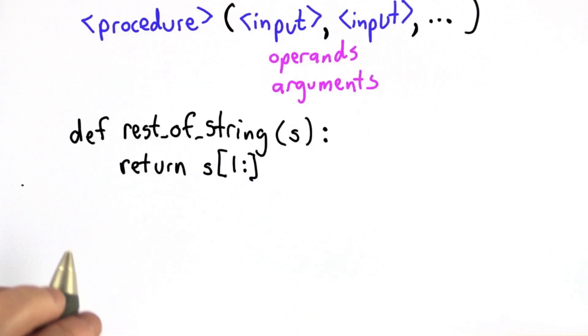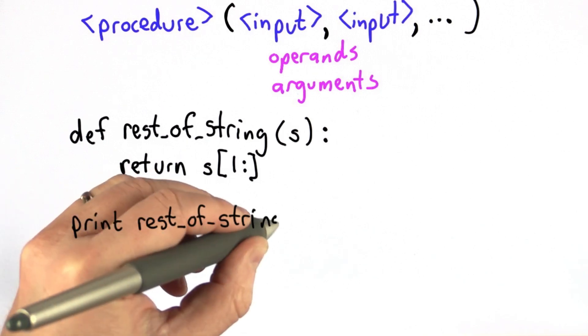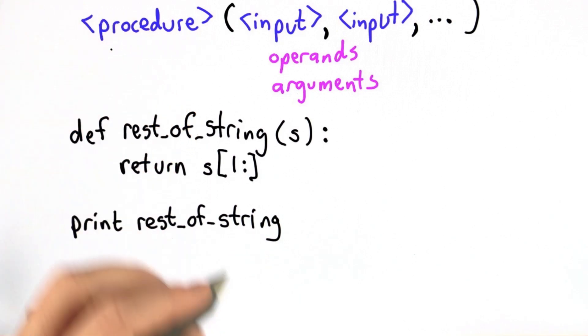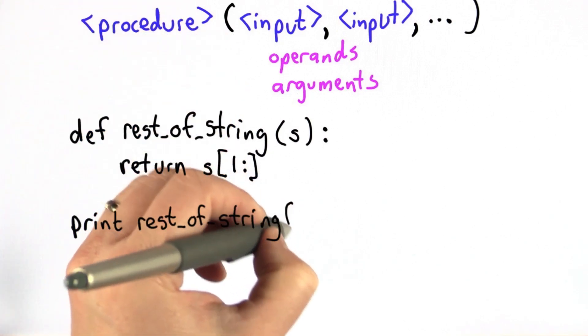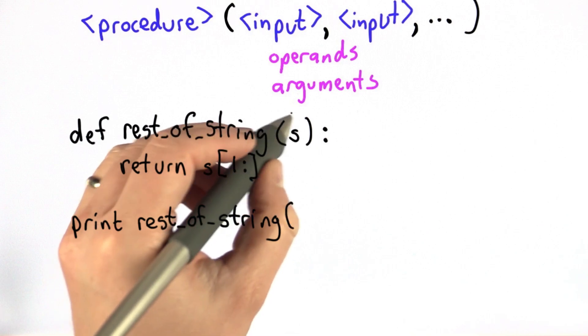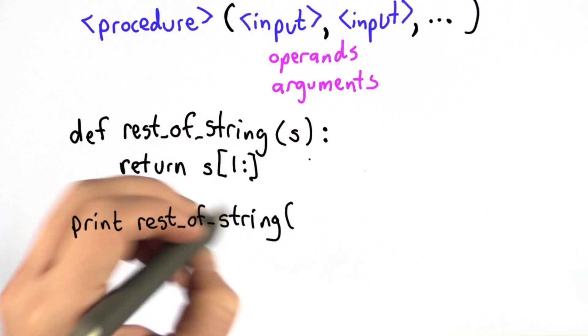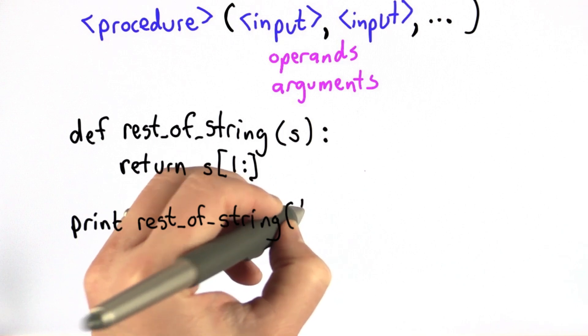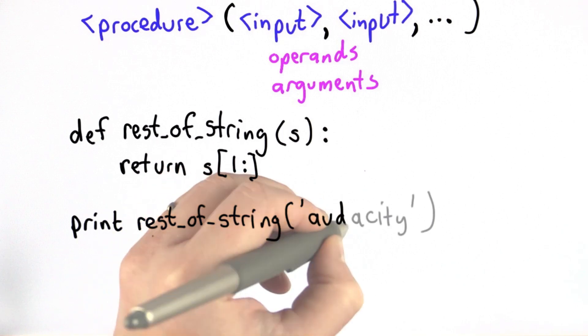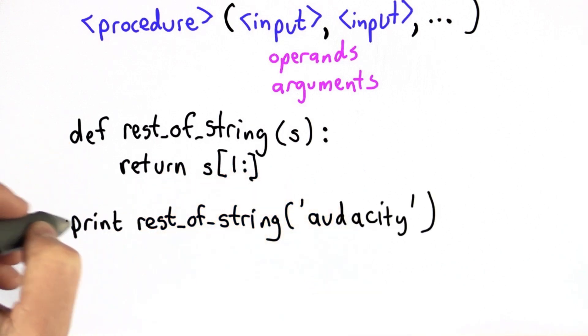Here's an example of how to use this procedure. So we could call it directly. We could say, print rest_of_string. So that's our procedure. Now we're going to have our paren, and we're going to pass in an input. There's one parameter to rest_of_string, so we need one input to pass in. And it should be a string, so we'll pass in the string audacity.